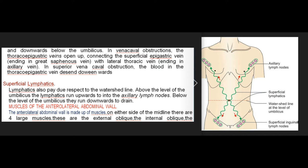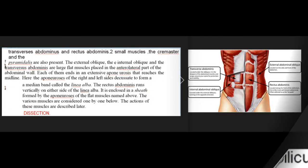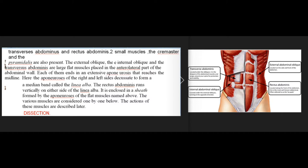Muscles of the anterolateral abdominal wall. The anterolateral abdominal wall is made up of muscles. On either side of the midline there are four large muscles: the external oblique, the internal oblique, the transversus abdominis, and rectus abdominis. Two small muscles, the cremaster and the pyramidalis, are also present. The external oblique, internal oblique, and transversus abdominis are large flat muscles placed in the anterolateral part of the abdominal wall, each ending in an extensive aponeurosis that reaches the midline, where the aponeurosis of the right and left sides decussate to form a median band called the linea alba. The rectus abdominis runs vertically on either side of the linea alba, enclosed in a sheath formed by the aponeurosis of the flat muscles.